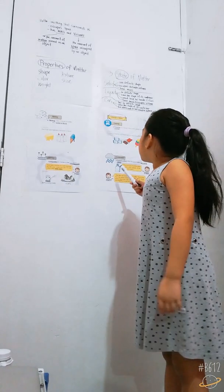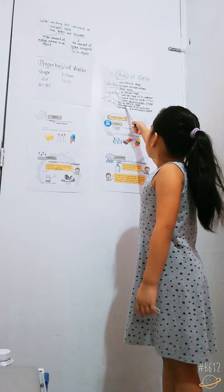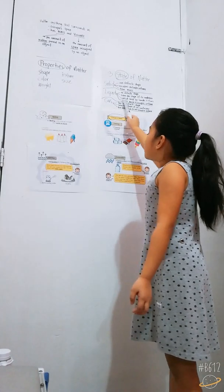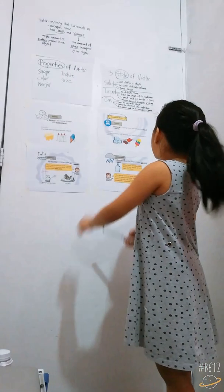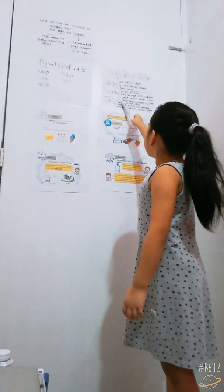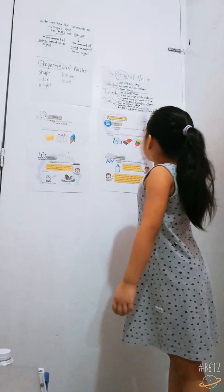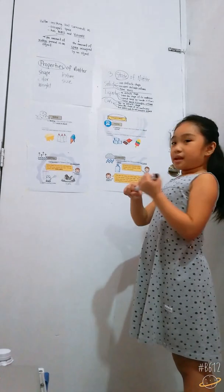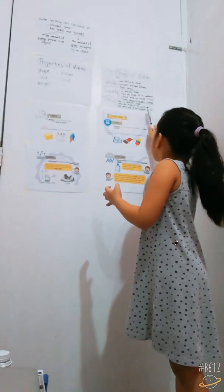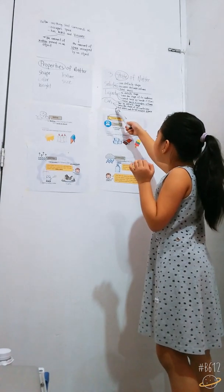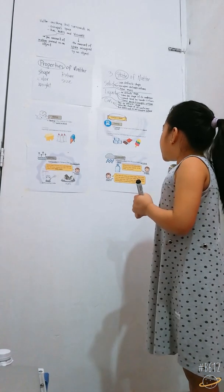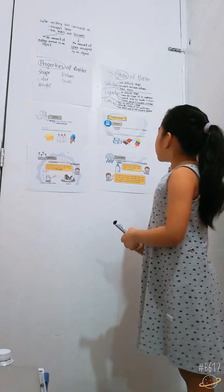Gas also takes the shape of its container like liquid. Solid and liquid have both mass and volume, but gas only has mass. If you ask why gas only has mass and not volume — because it's gas. An example of gas is smoke.